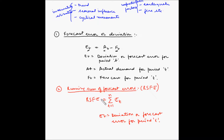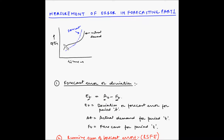Now when we calculate the sum of forecast errors, the large positive errors will be offset by the large negative errors. As shown in this graph, the black line represents the actual demand while the blue dotted line represents the forecast. Here the actuals are higher than the forecast, making those errors positive, and in other periods the actual demand is lesser than the forecast, making those errors negative. So the positive and negative cancel out each other, and the total error will be approximately equal to zero.